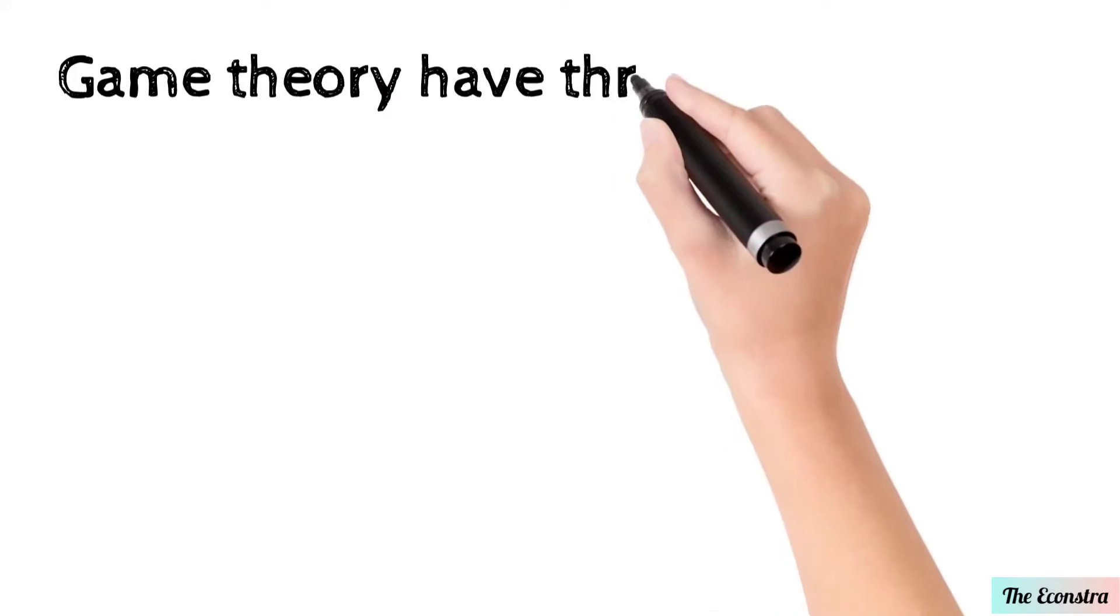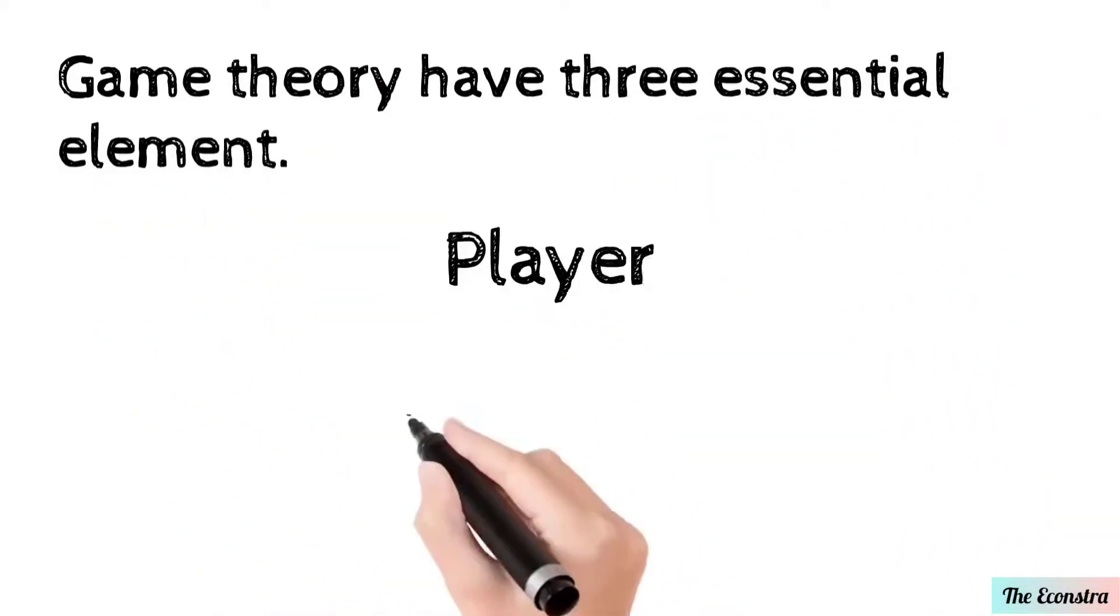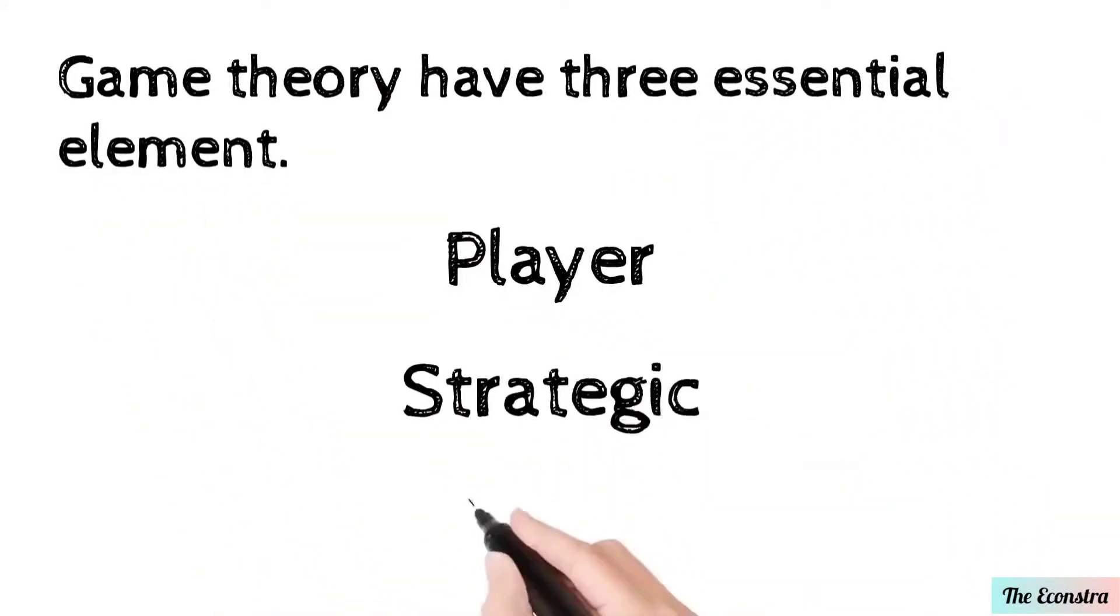Game theory has three essential elements: first player, second strategy, and third payoff.